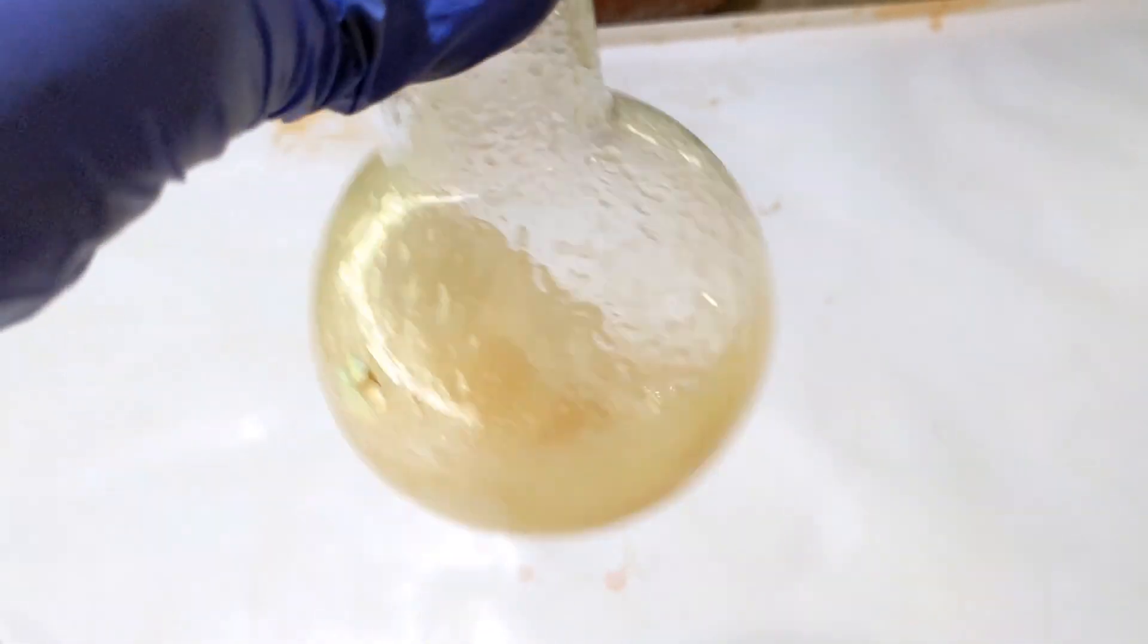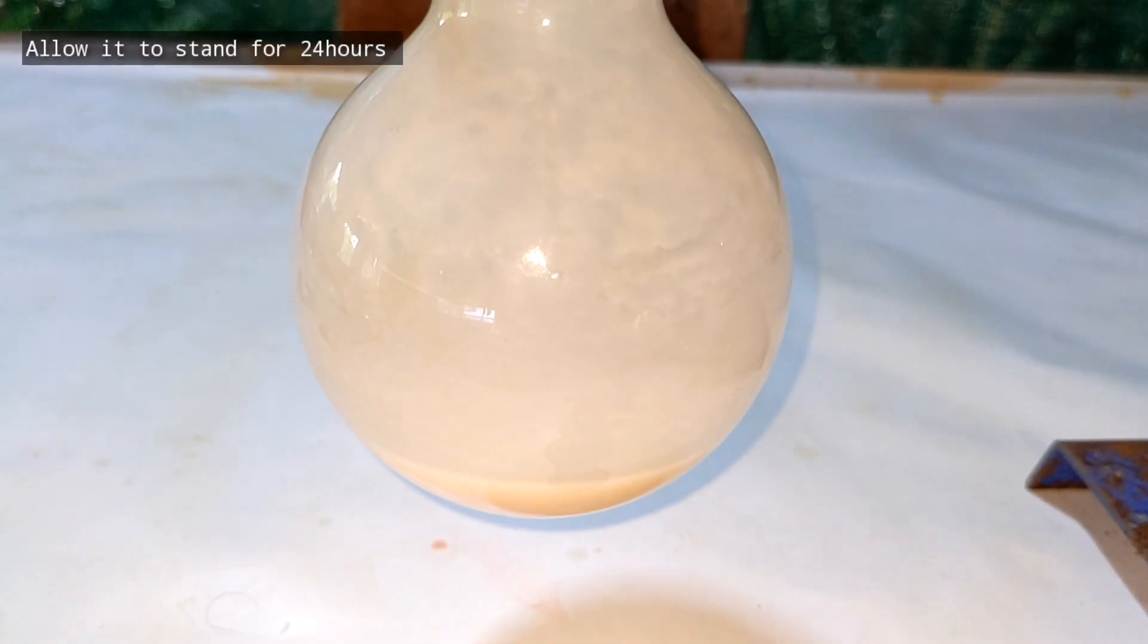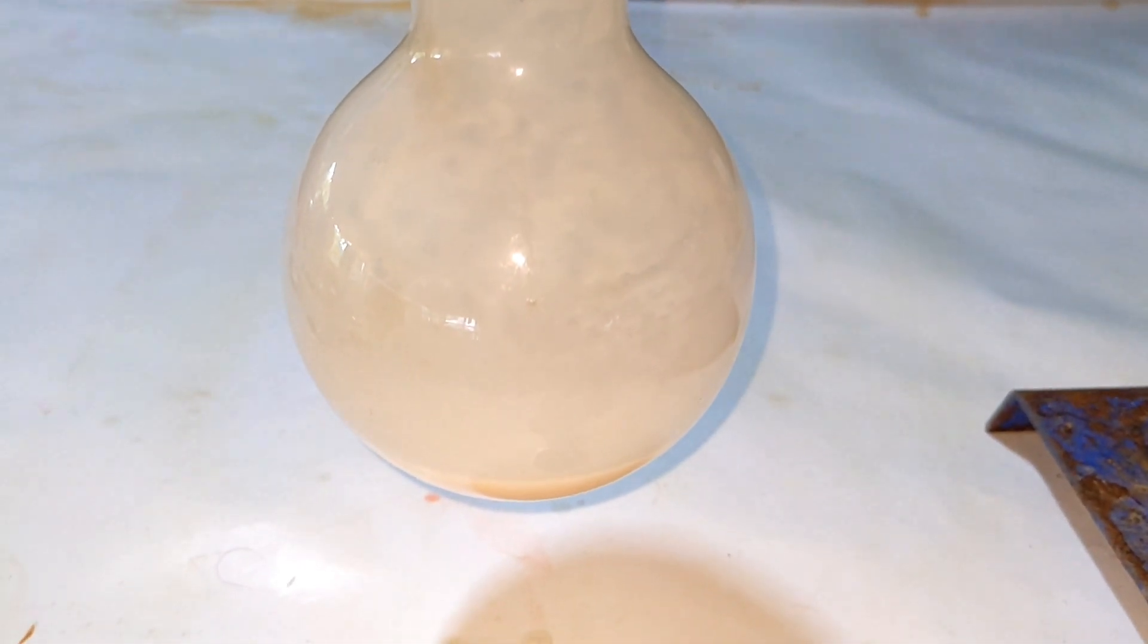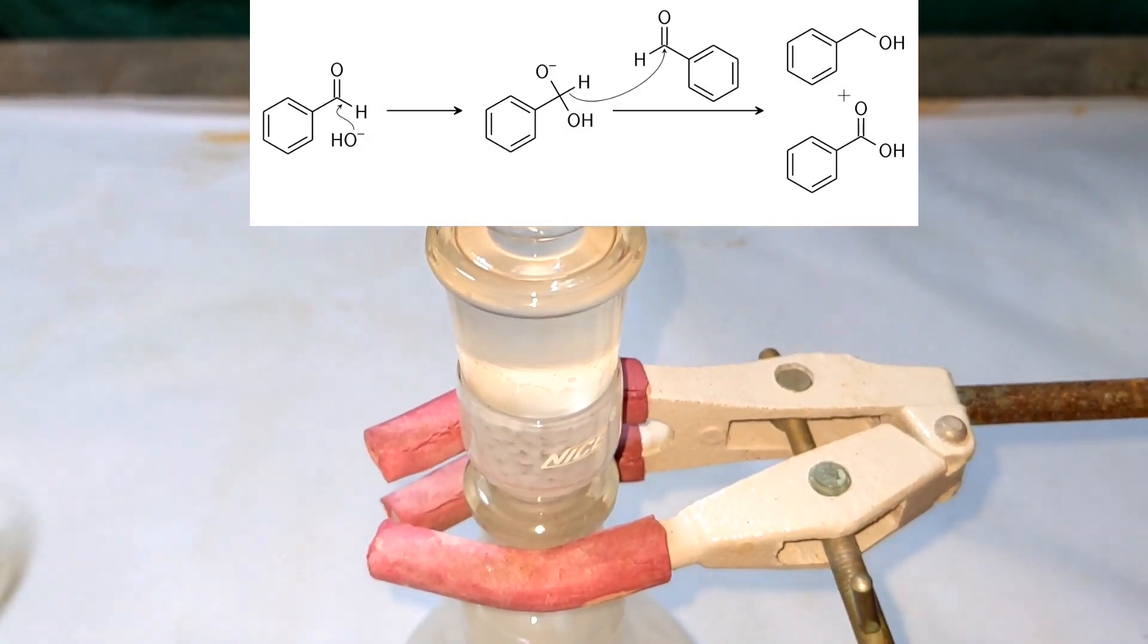Once we have a uniform suspension without any separate layer formation, the flask was kept with the cap on without pressure. It was placed overnight. An exothermic reaction takes place leading to the formation of our desired products.